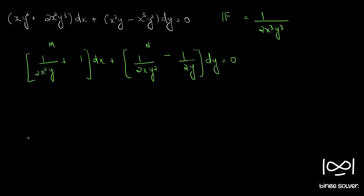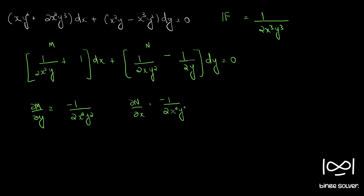Now this is our new M and new N. We check whether the equation is exact. ∂M/∂y = −1/(2x²y²) and ∂N/∂x = −1/(2x²y²). Therefore ∂M/∂y = ∂N/∂x, and the differential equation is exact.